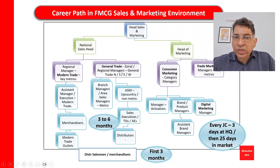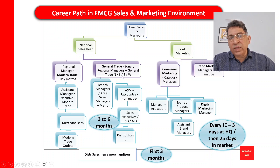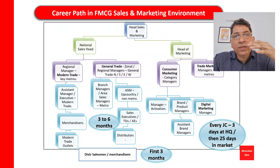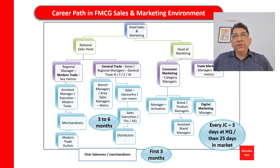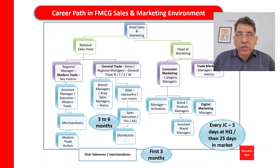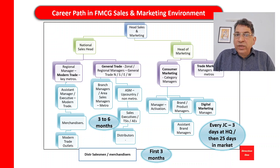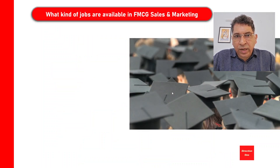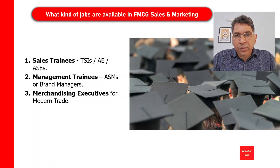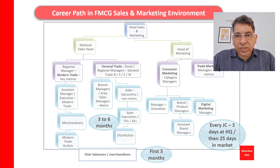To summarize the sales structure: you have a modern trade structure and a general trade structure. The general trade structure has a national sales manager, then zonal managers, then area sales managers, and then TSIs, AEs, or TSEs reporting into them who handle the frontline distributors. The distributors have sales people who actually do the selling. Your role in most FMCG companies is to handle this entire supply chain and make sure it delivers.